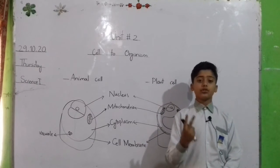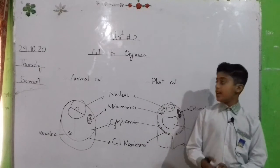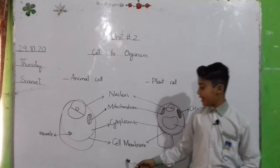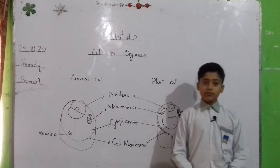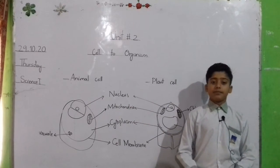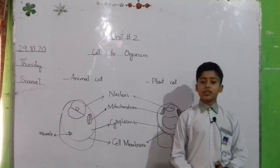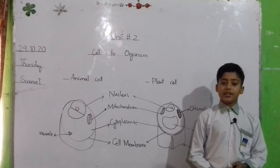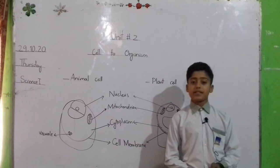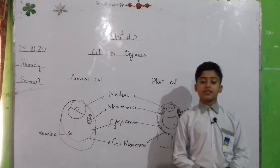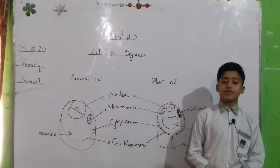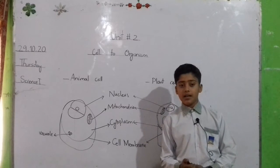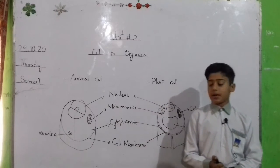There are two types of cell: animal cell and plant cell. Cell membrane. It is present in both animal and plant cell. It controls the passage of materials in or out of the cell. It is also called the semi-permeable membrane.